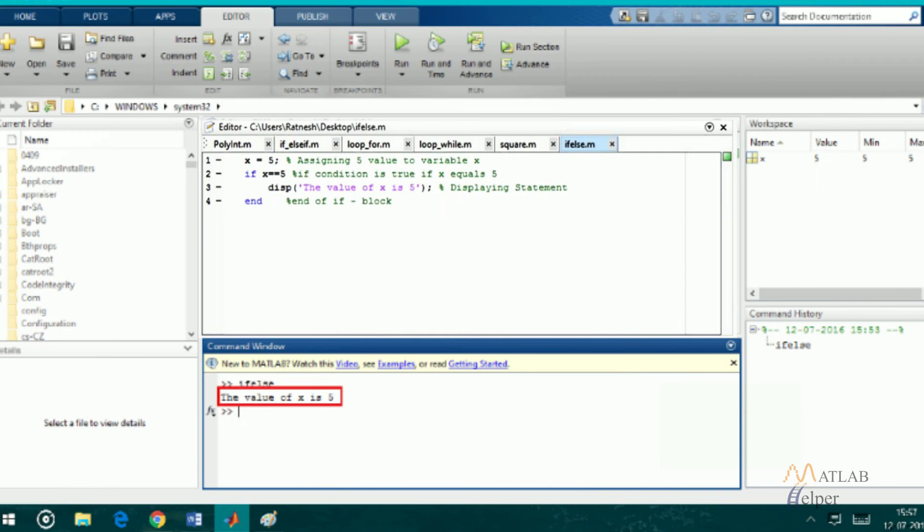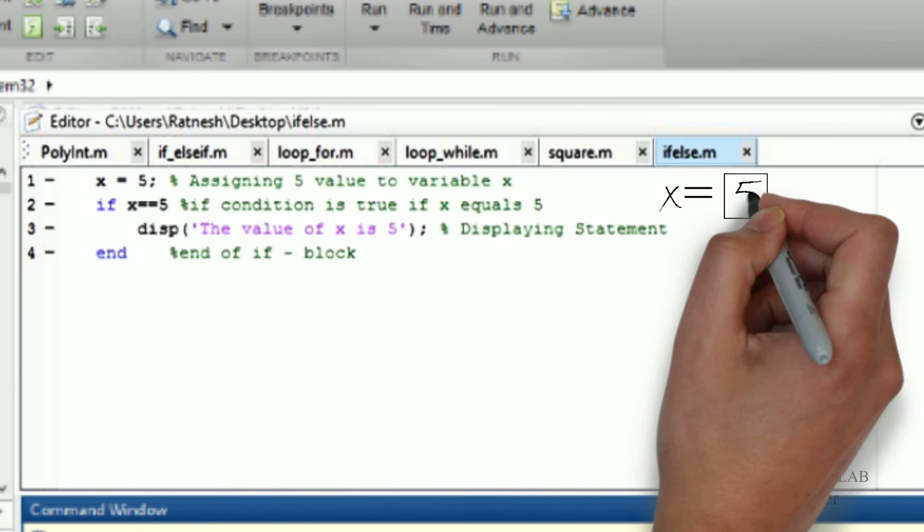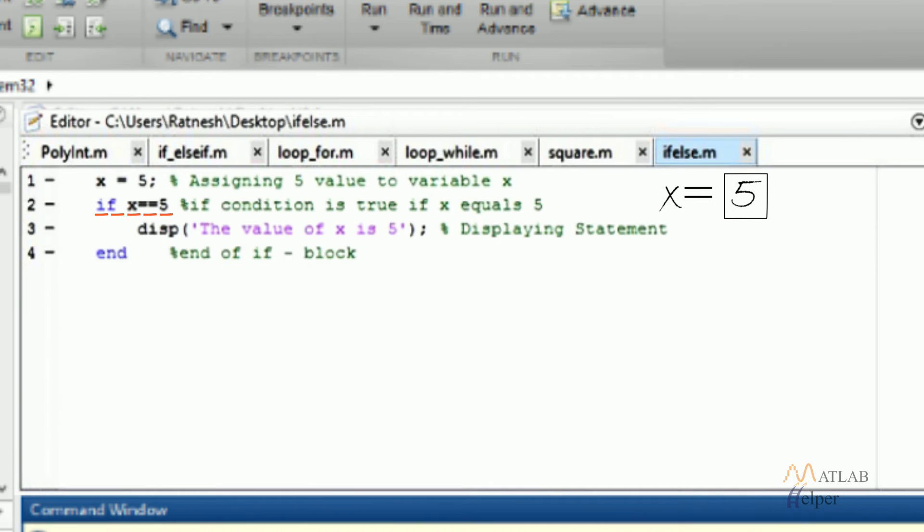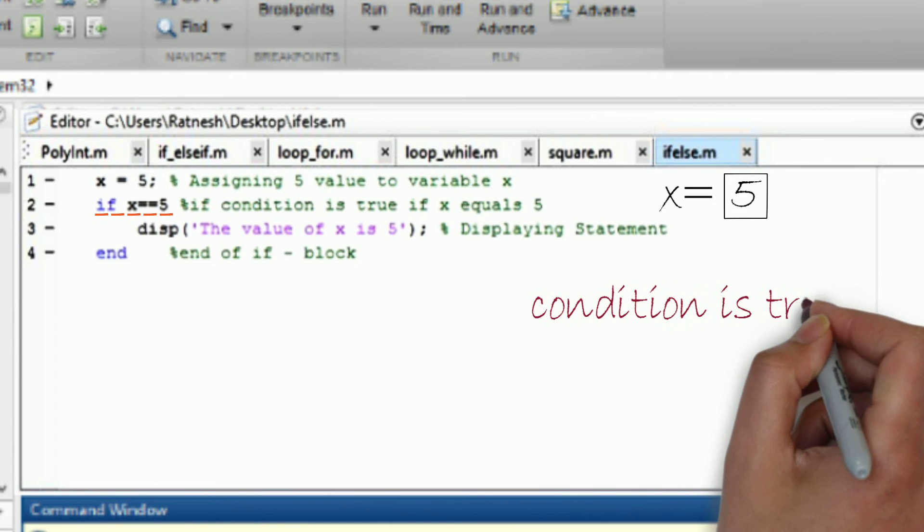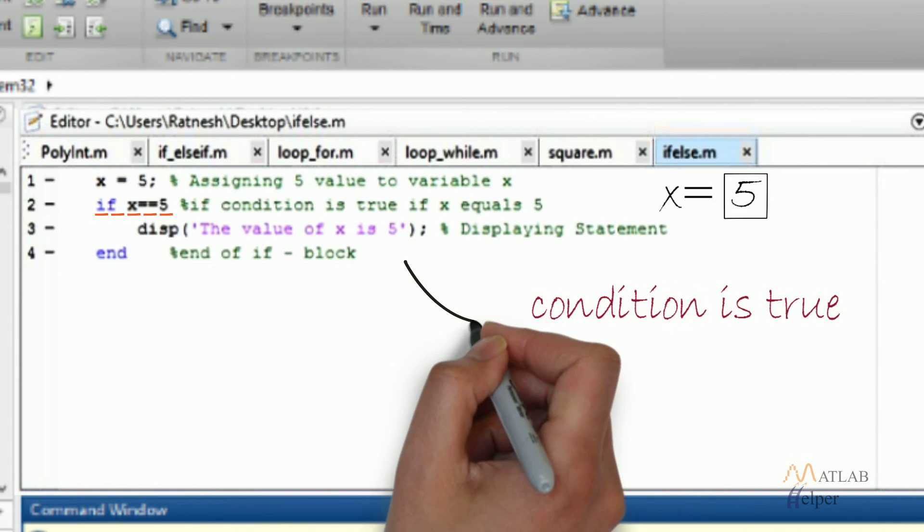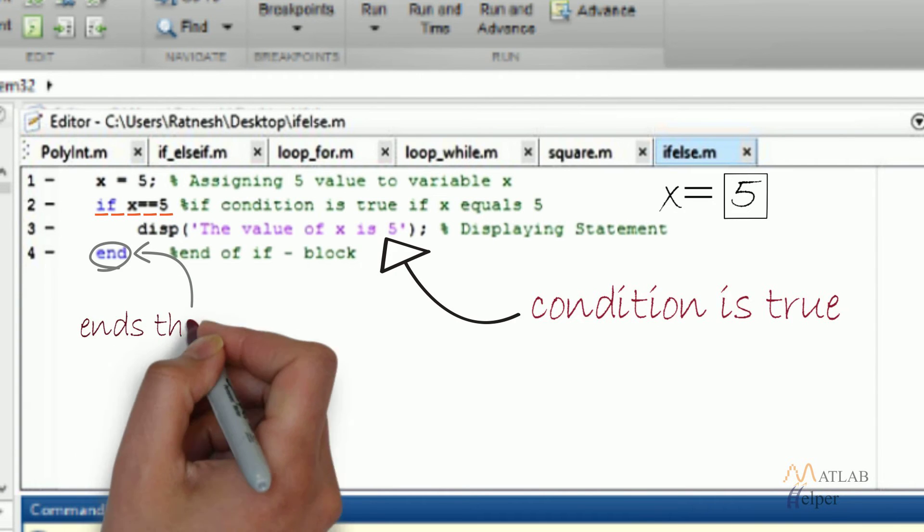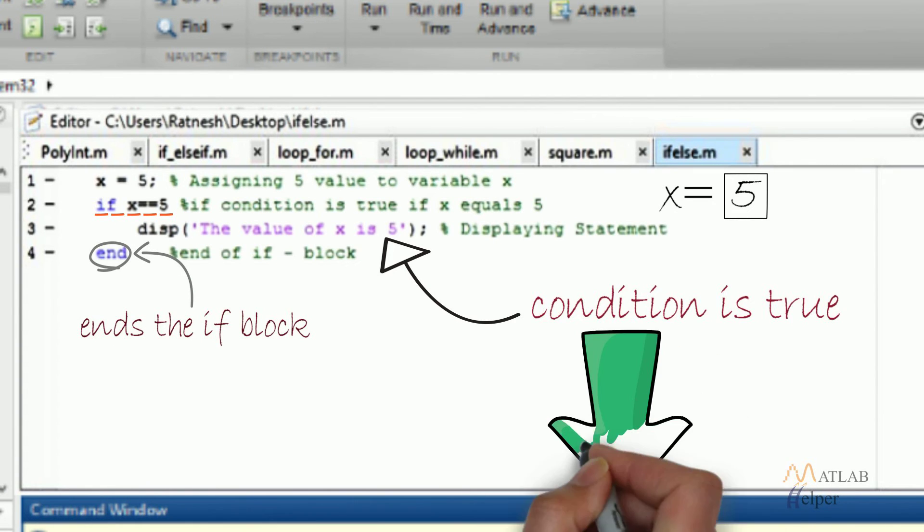In the given example, the first line assigns value 5 to variable x, and the next line checks the condition. If the condition is true, the statement following it will be displayed. Here the condition is true, hence the statement following if will be displayed. The last line 'end' tells the application this is the last line of the if block.